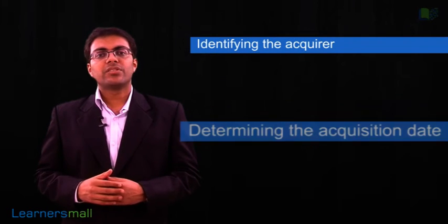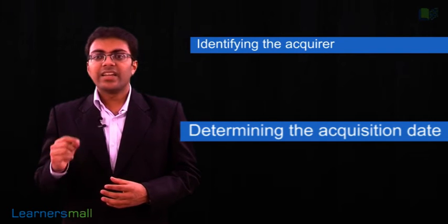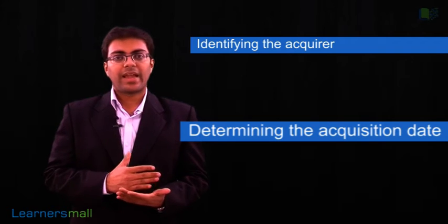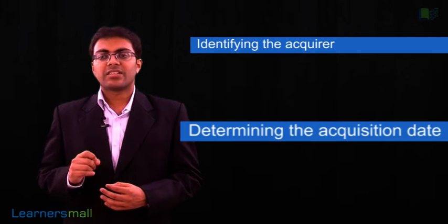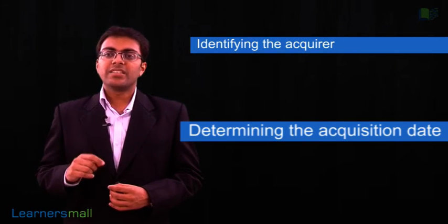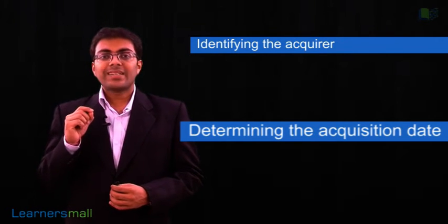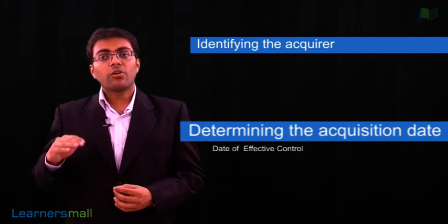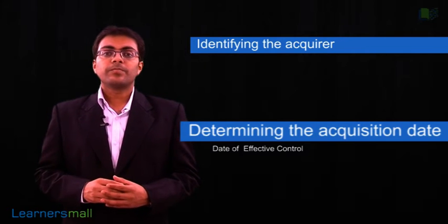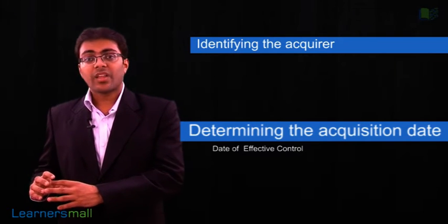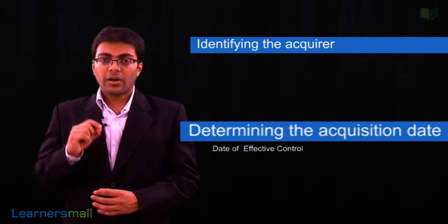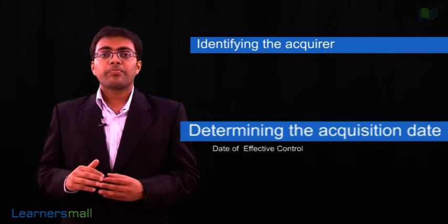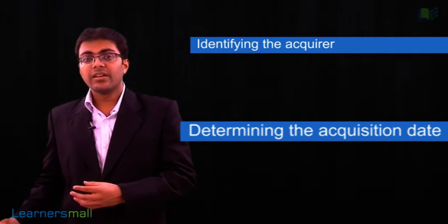The next step is to identify the acquisition date. The acquisition date is very important because it is the date from which the results of the acquired company would be included in the financial statements of the acquirer. It is also the date on which the fair value of the acquired assets is determined. The acquisition date is the date when control is actually obtained — not necessarily the date of agreement, nor the closing date of financial statements. For example, if a government approval is pending and it is not merely procedural in nature, the acquisition date would not be counted until that approval is received.